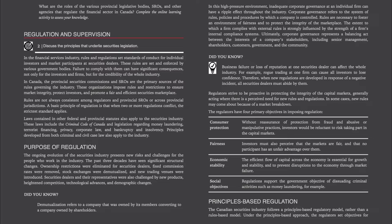Demutualization refers to a company that was owned by its members converting to a company owned by shareholders. In this high-pressure environment, inadequate corporate governance at an individual firm can have a ripple effect throughout the industry. Corporate governance refers to the system of rules, policies, and procedures by which a company is controlled. Rules are necessary to foster an environment of fairness and to protect the integrity of the marketplace. Business failure or loss of reputation at one securities dealer can affect the whole industry; for example, rogue trading at one firm can cause all investors to lose confidence. Therefore, when new regulations are developed in response to a negative incident, all securities dealers must abide by them.